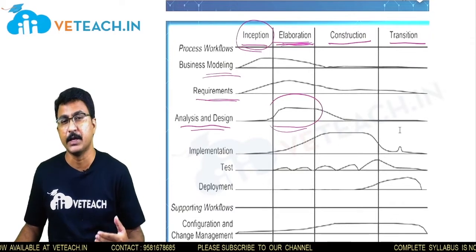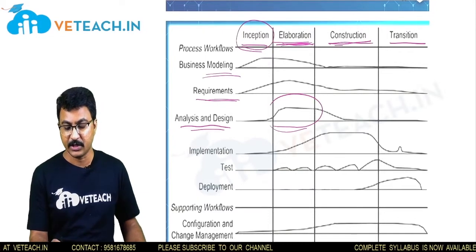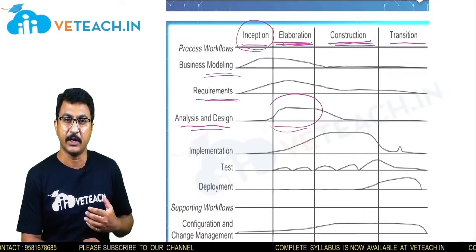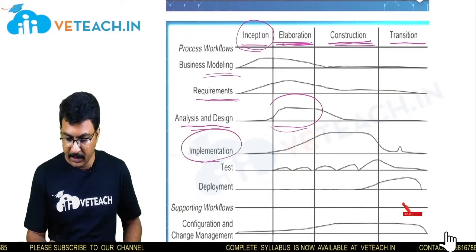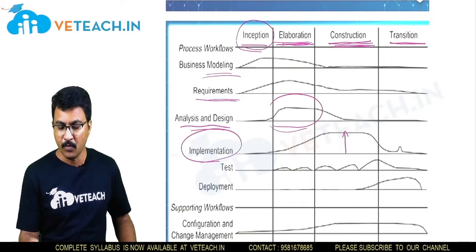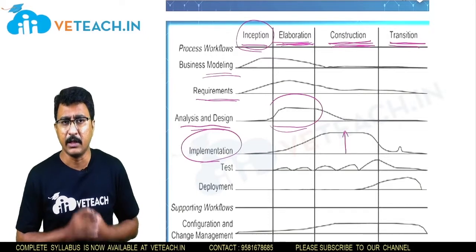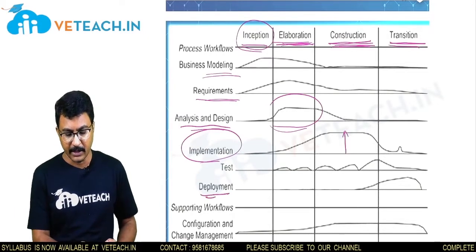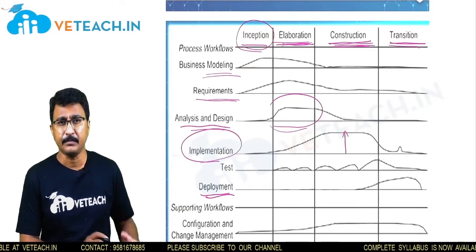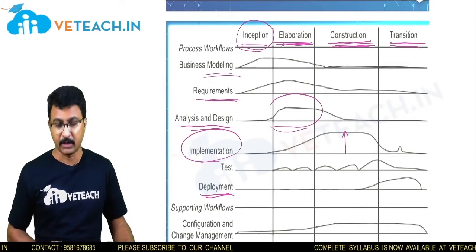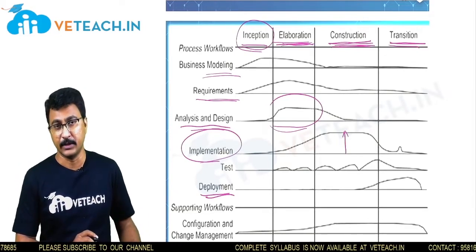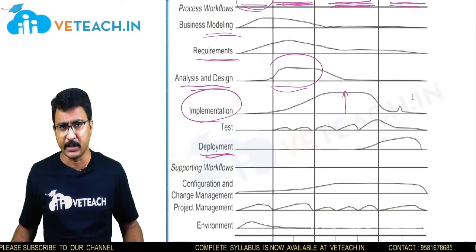Completing the elaboration phase pushes you to the third phase — the construction phase — where we try to construct the model and the product. Implementation is high in the construction phase. From construction, we move on to the transition phase, where our product faces the real world with the help of deployment. It is rendered at a certain location, given to the customer, and they approve whether it can be of use or not. Most SDLC products fail at the transition phase.